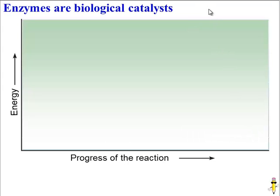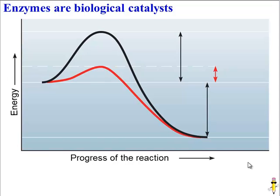Enzymes basically function as biological catalysts. Let's take a look at this graph to figure out what a catalyst is. On the x-axis, our independent variable is showing the progress of a chemical reaction from start to finish. And on the y-axis, our dependent variable is the amount of energy being changed throughout the reaction. So let's compare a reaction with and without an enzyme.